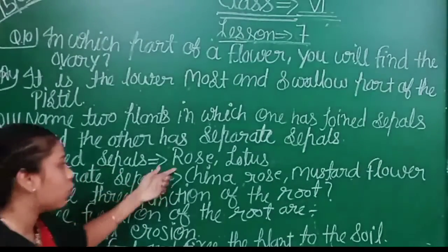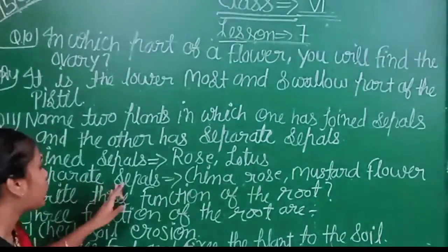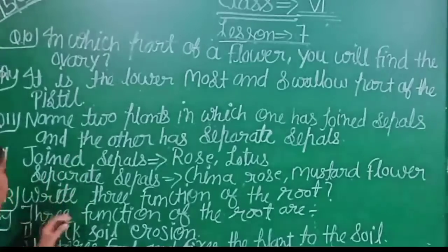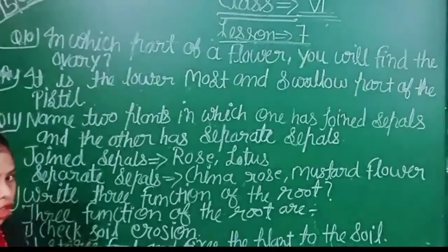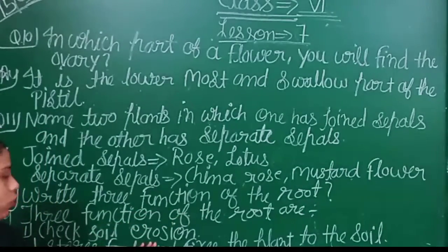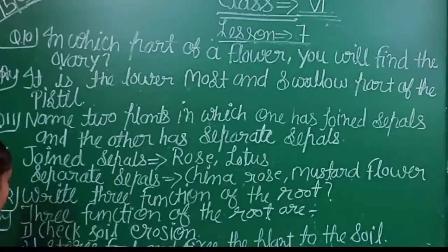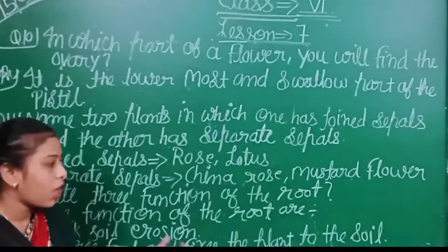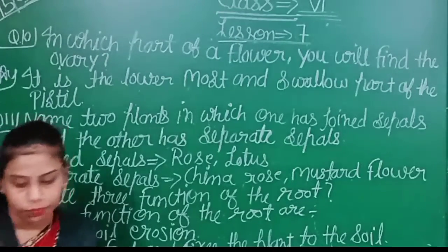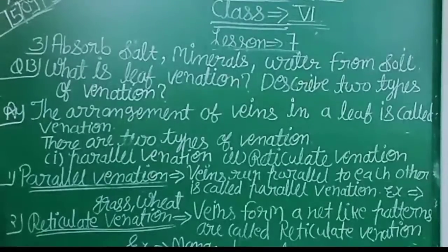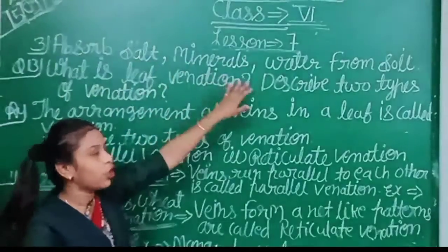The joint petals are like rose. Between those separate petals, there are examples. The three components are petals, rose, lotus, China rose, mustard flower.